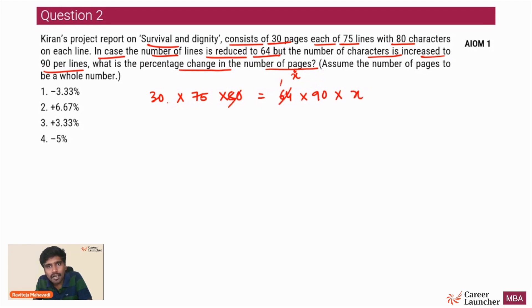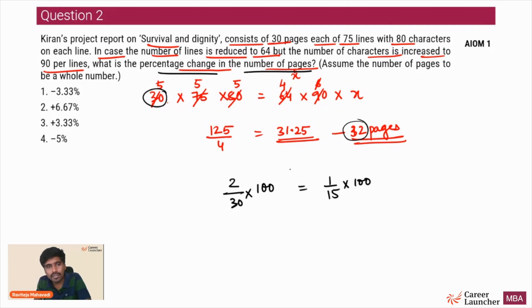6 5s are 30, so x must be equal to 125 by 4, which is 31.25. So number of pages has to be 31.25. Now the question you need to ask yourself is - can there be 1.25 pages? No, if there is 1.25 pages, that actually means 32 pages. The question is asking what is the percentage change in the number of pages? Initially there were 30 pages, now there are 32 pages. The increase will be 2 upon 30 into 100. For those of you who know reciprocals, 1 by 15 corresponds to 6.67%, and that is going to be our increase in this case. This is again a question from All India Open Mock 1.